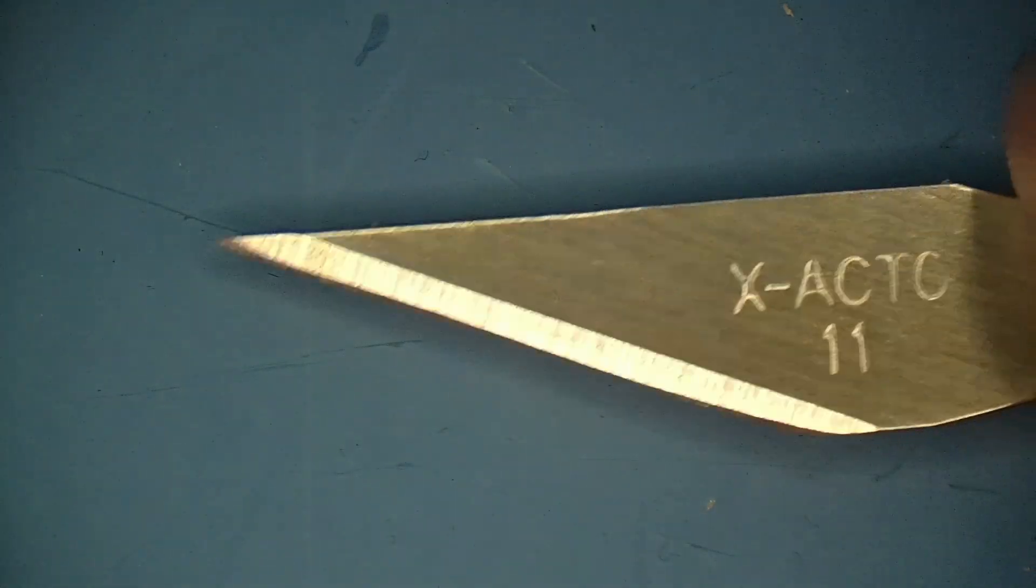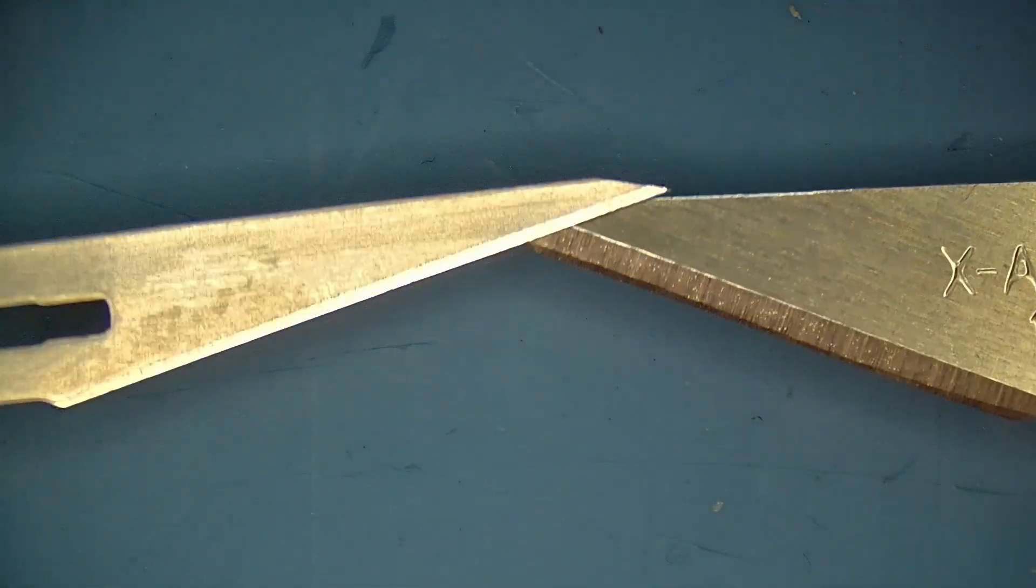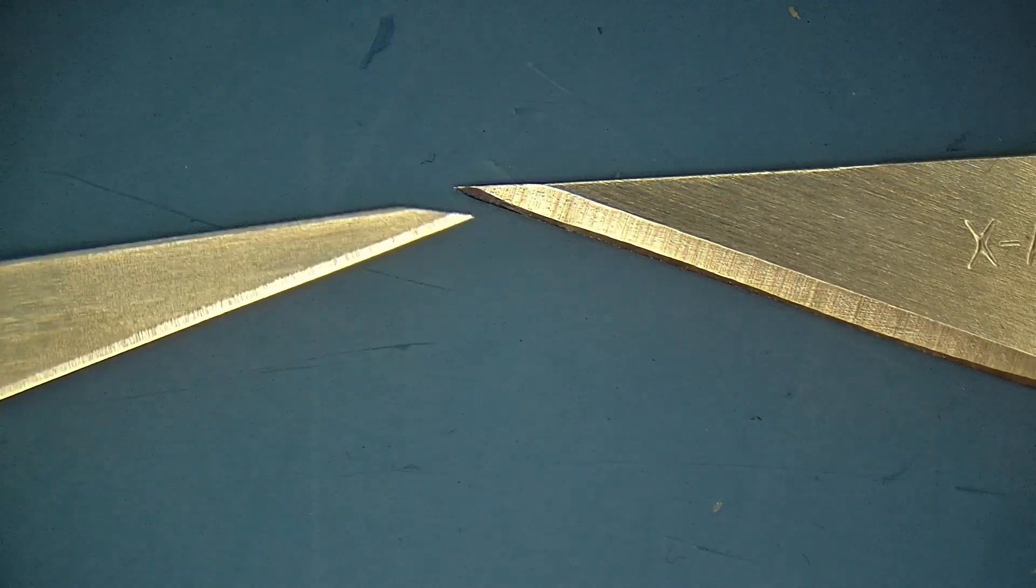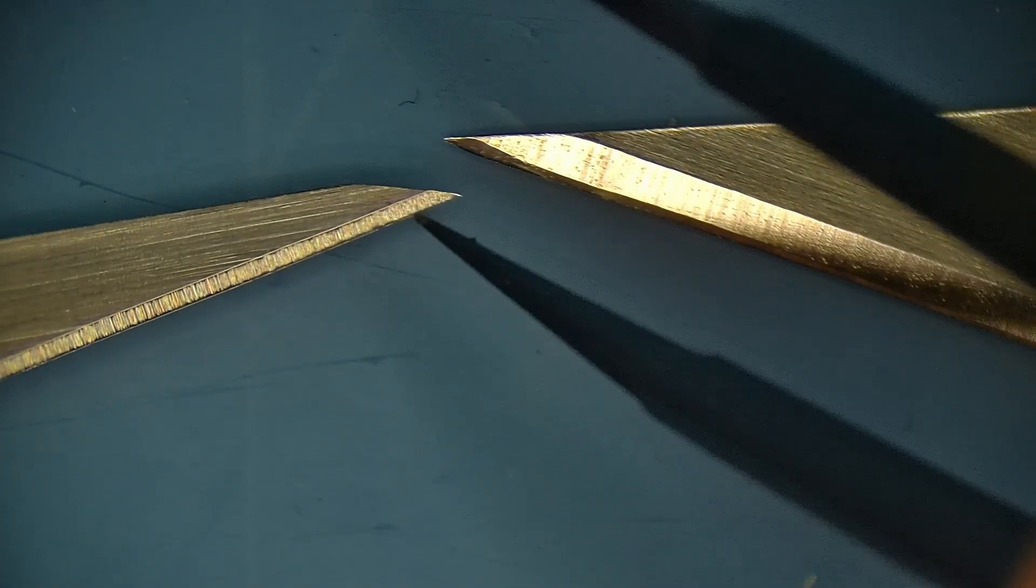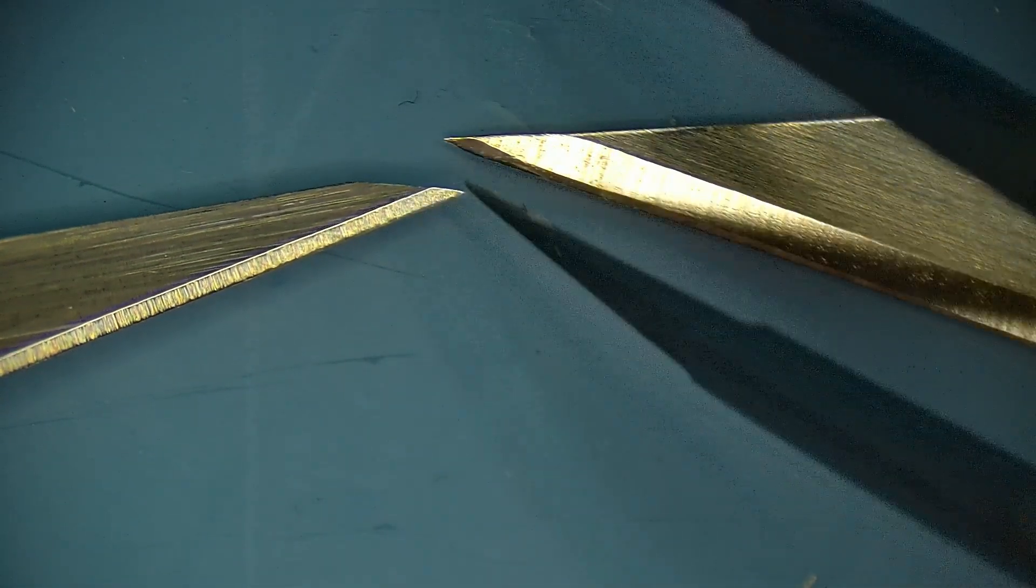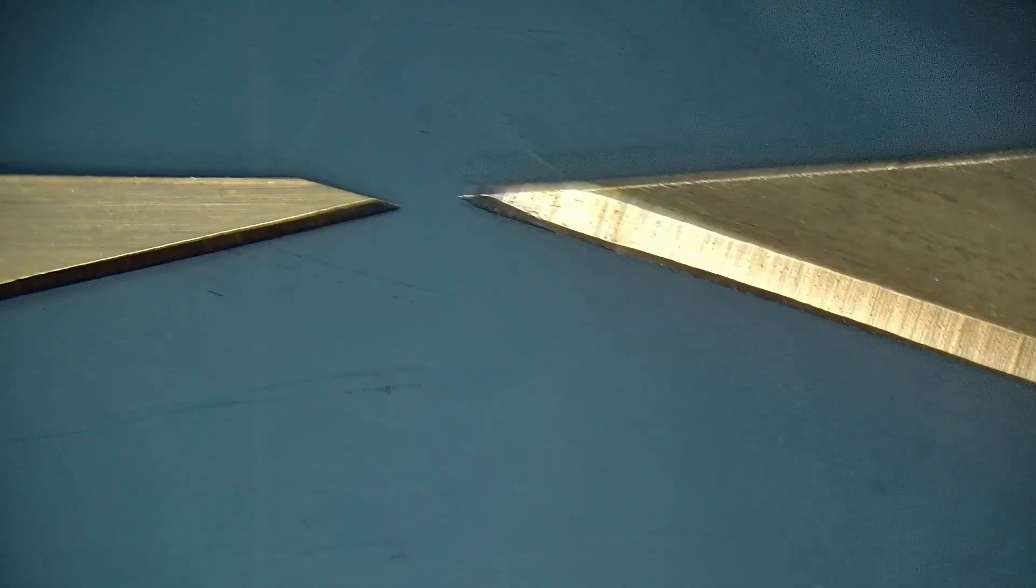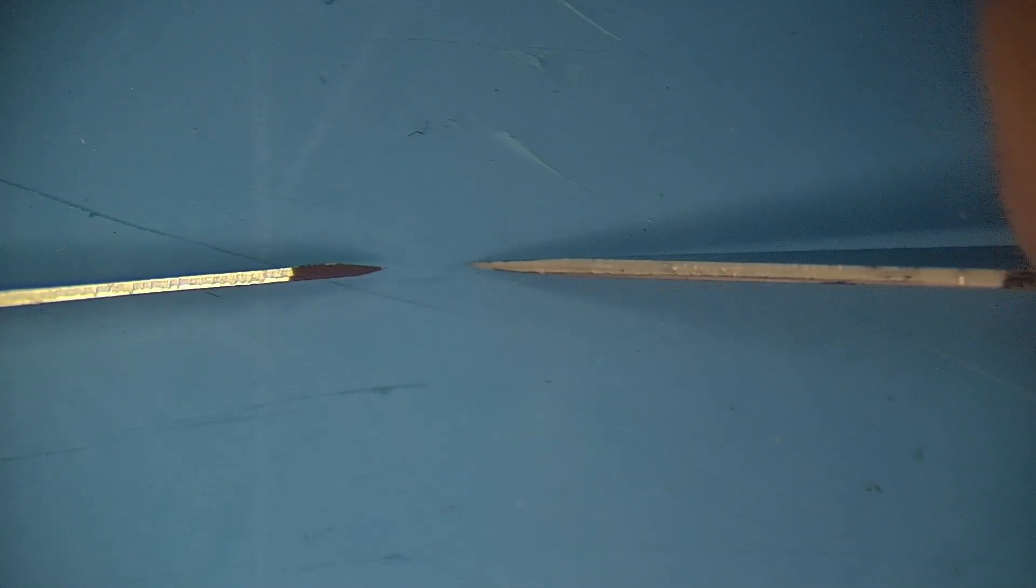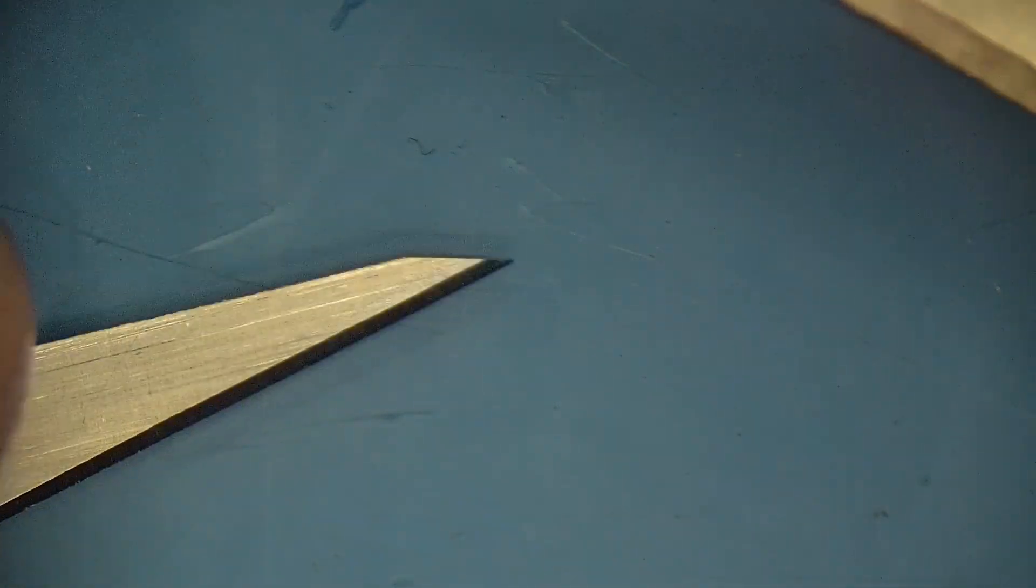So in comparison here is the number 11 exacto blades that everybody is used to seeing me use on this channel, and then on the left here is the number 11 surgical blade that I have received in the mail. You can see that the tips on the end, they're actually very similar. Now the surgical blade, it's got more structure to it. It's built to be stronger at the end. However, the exacto blade is not quite as strong at the tip but it is longer and skinnier. So that exacto blade has a much much longer slender tip on it, and the surgical blade is fatter and stronger. So for some things that I do at this workbench I'm gonna prefer the exacto blade. For other things I do at this bench I'll prefer the surgical blade.